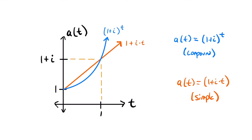This explains what happened in both examples. In the first, we looked at a three-year period, and compound interest generated more — which makes sense because three years is greater than one. In the second example, for a six-month period, which is less than one year, simple interest generated more interest — granted, it was only 10 cents, but it was still more. That's something to keep in mind as you use these two different types of interest rates.